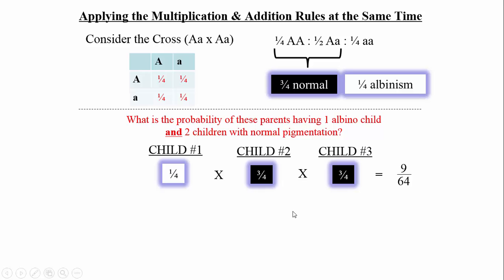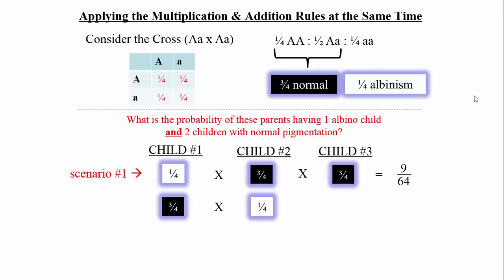This satisfies the question, but is it the only way? No, because the question doesn't specify order. In scenario two, the albino child is second: normal, albino, normal — still 9/64. In scenario three, the albino child is third: normal, normal, albino — again 9/64. Each scenario satisfies the question individually.